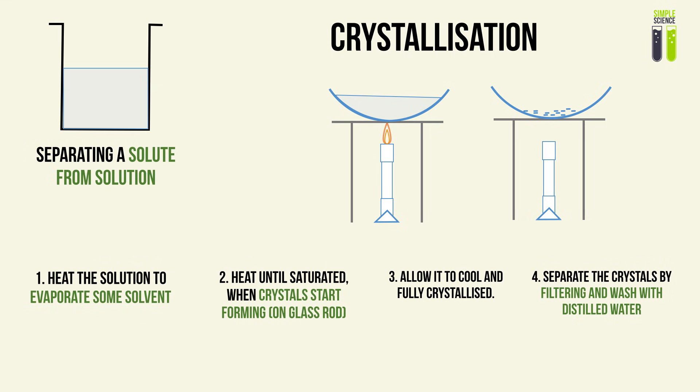The first step is to heat the solution to evaporate some of the solvent, heating until it is saturated. To test when the liquid is saturated, use a glass rod and stir in the liquid as it heats. When crystals start forming on the glass rod, stop heating — that is when the liquid has saturated and crystallization has begun. Allow the mixture to cool, and it will start to crystallize. You end up with solid crystals which you can filter and wash with distilled water and filter paper, obtaining pure crystals of the initial solute.